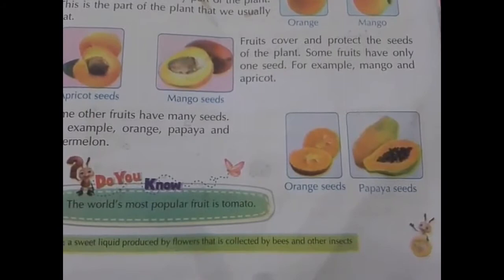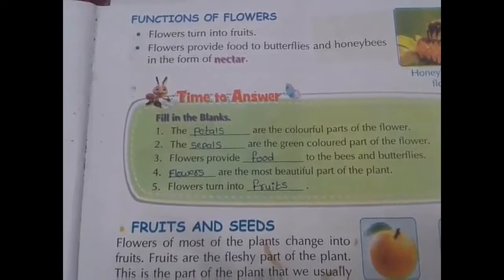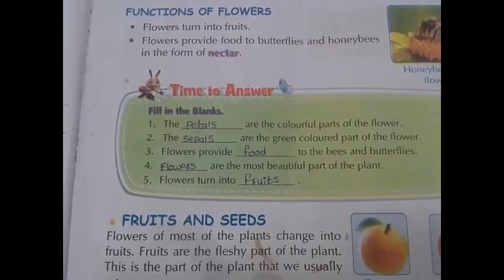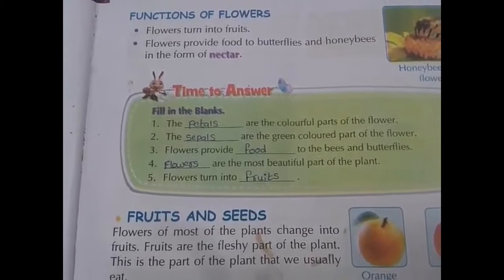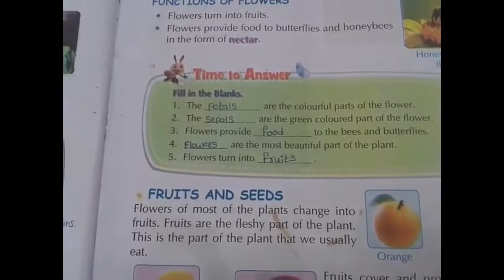Page number 79, fill in the blanks: The colorful parts of the flower are petals. The green colored part of the flower are sepals. Flowers provide food or nectar to bees and butterflies. Flowers are the most beautiful part of the plant. Flowers turn into fruits.